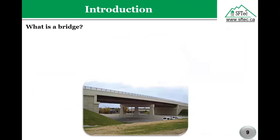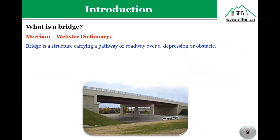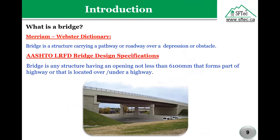Let us start with a question: What is a bridge? There are two definitions. The first is from Merriam-Webster: a bridge is a structure carrying a roadway over a depression or obstacle. The second is according to AASHTO LRFD Bridge Design Specification — AASHTO stands for American Association of State Highway and Transportation Officials — which defines a bridge as a structure with an opening of 6.1 meters that is part of a highway or crosses an intersection.